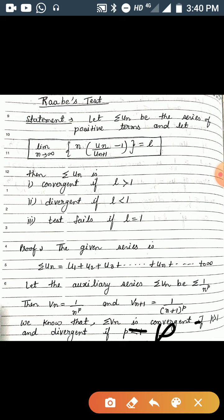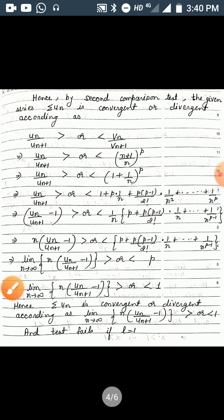Hence, by the Second Comparison Test, the given series summation u_n is convergent or divergent according as u_n/u_{n+1} is greater than or less than v_n/v_{n+1}. Substituting the values of v_n and v_{n+1}, we get u_n/u_{n+1} greater than or less than (n+1)^p / n^p, which simplifies to (1 + 1/n)^p.